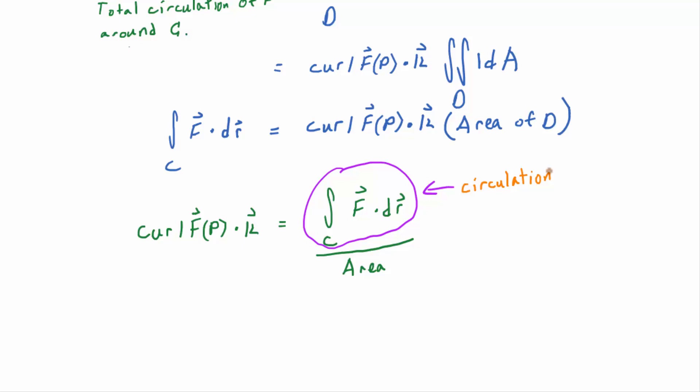So the curl of F evaluated at P dotted with K, which, by the way, since K is a unit vector, that's just really the amount of curl, or the magnitude of that in the direction of K. It's a projection. If you analyze the projection formula we developed way back in chapter 12, when this guy's a unit vector, then its absolute value would equal the magnitude of that vector. So you can think of this as the amount of curl in the direction of the unit vector K.